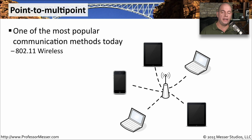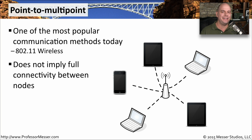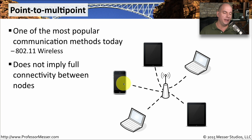Another popular networking topology is point-to-multipoint. If you're on a wireless network right now, it's probably something like a point-to-multipoint network. Point-to-multipoint doesn't necessarily mean that everybody can talk to everyone else — it really means that everybody is talking to one central device. Most wireless networks will allow you to talk to other devices on the network, but some are configured so that wireless devices cannot communicate with each other and can only talk to the central device.